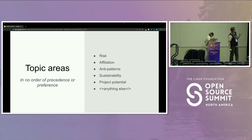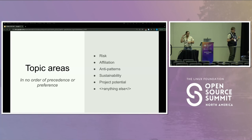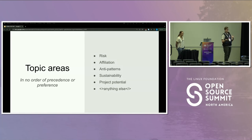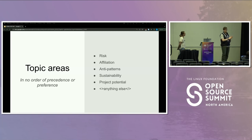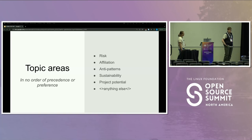Setting the stage of what we've been thinking about: we've been focusing on risk and project risk, affiliations — what companies and individuals are interacting with a community at the contributor level, GitHub data — anti-patterns we're trying to avoid in our analysis and not mis-publicize a pipeline that doesn't make sense with an ethical or scientifically robust paradigm, sustainability with respect to long-term project and ecosystem health, project potential for identifying nascent up-and-coming projects, and anything else that members of the community find especially interesting.